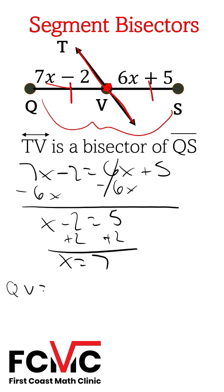Let's solve for Qv now. Qv we know is 7x minus 2. Put 7 in for x. I'll have 7 times 7 minus 2. And Qv is going to be equal to 47.